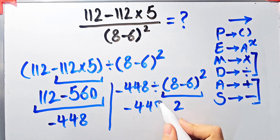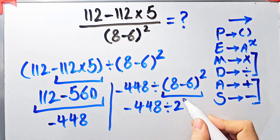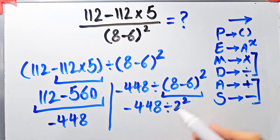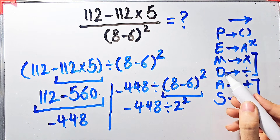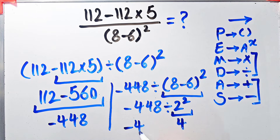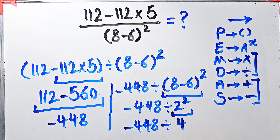Now we have negative 448 divided by 2 to the power of 2. We have division and exponent — first we simplify the exponent because it has higher priority than division. 2 to the power of 2 equals 4. Then negative 448 divided by 4 equals negative 112. The final answer is negative 112.